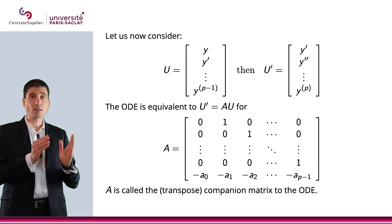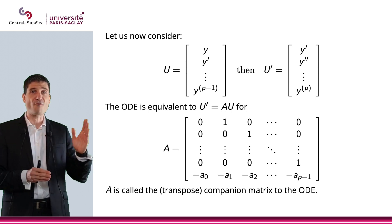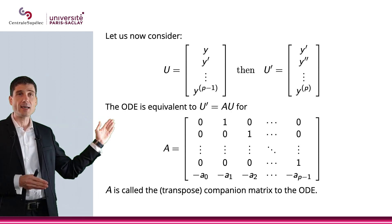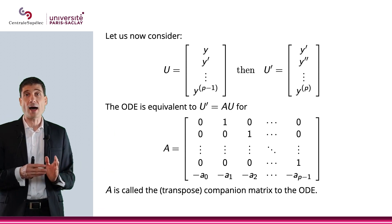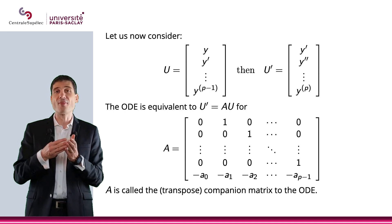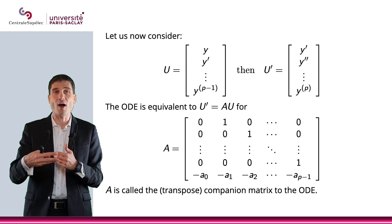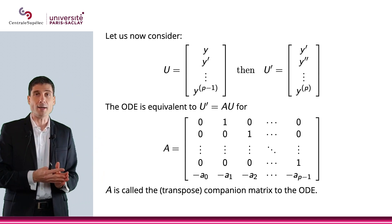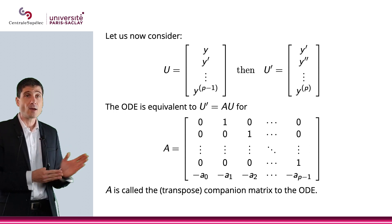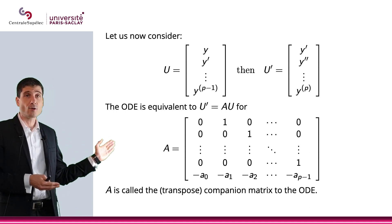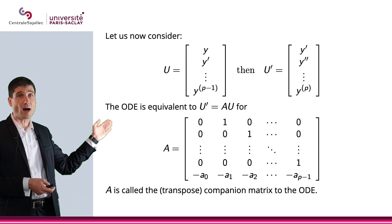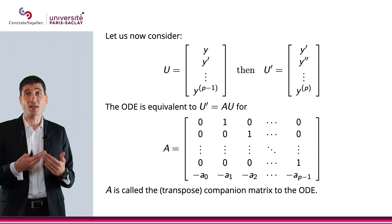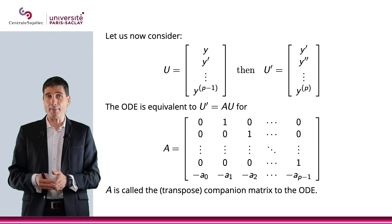Instead of considering y, I will consider the vector u, which is y, y', all the way to y^(p-1), the p minus 1-th derivative of y. As you can see, when I do this, then the derivative of vector u is y', y'', all the way to the p-th derivative of y.